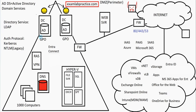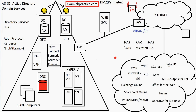It's called Entra Connect now, and it used to be called Azure AD Connect. Be advised, you really need to know the old name as well, as there's still a lot of documentation that uses the older name. This was a server you could set up on-premise, and what it would do is synchronize your user accounts out to the cloud.